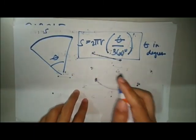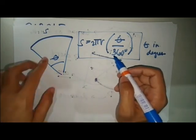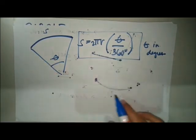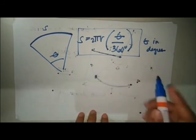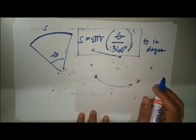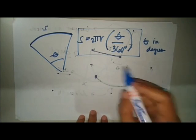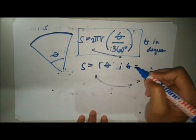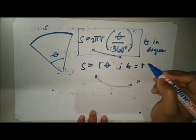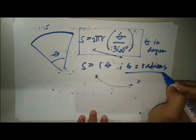In other books, the formula for arc length is written as S equals r times theta, where theta is in radians. So the arc length equals r theta when the angle is expressed in radians.